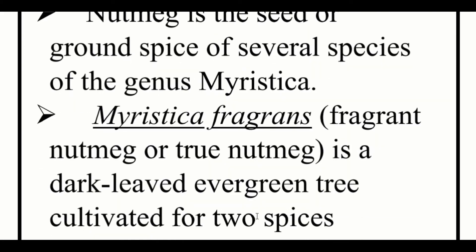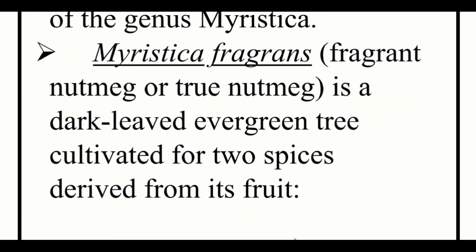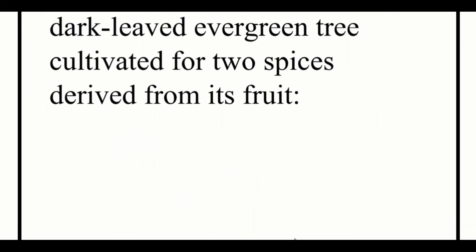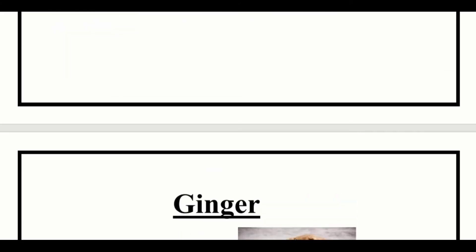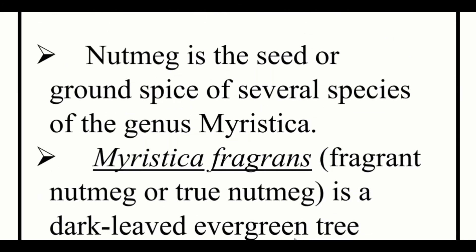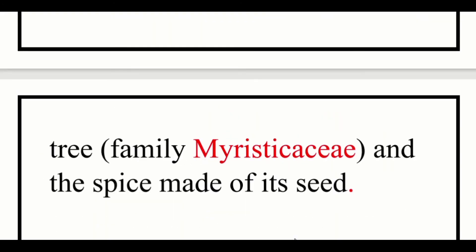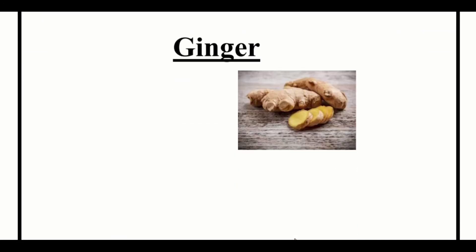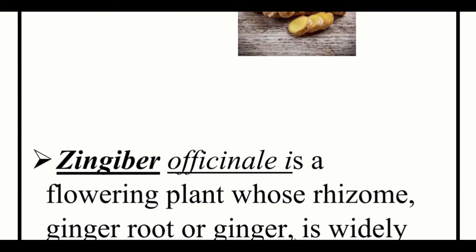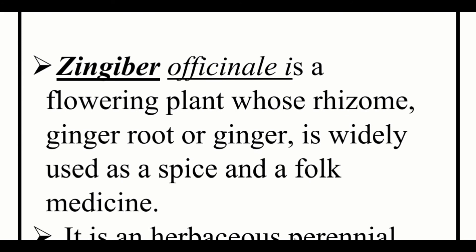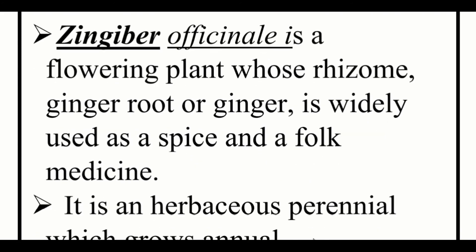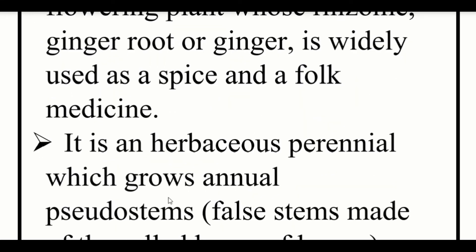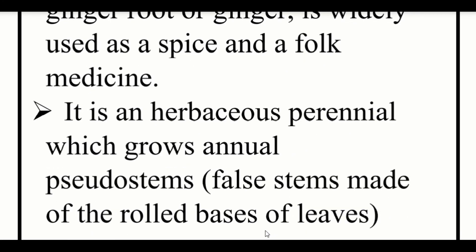Nutmeg, or true nutmeg, is a dark-leaved evergreen tree cultivated for two spices derived from its fruits. Ginger is a flowering plant whose rhizome — ginger root or ginger — is widely used as a spice and in folk medicine. It is an herbaceous perennial which grows annual pseudostems — false stems made up of rolled bases of leaves.